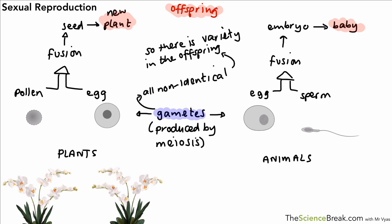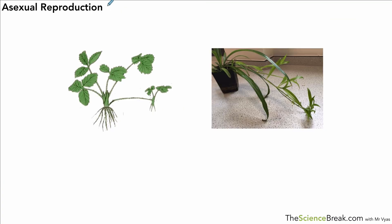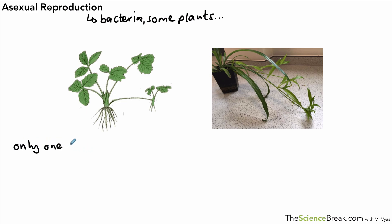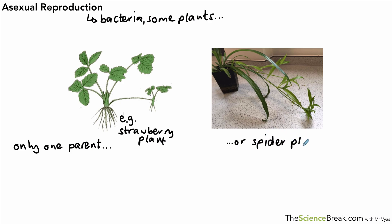Asexual reproduction is slightly different. It happens in some simple single-celled organisms, for example bacteria, but it can also happen in some types of plant. With asexual reproduction we only have one parent. Examples include the strawberry plant and the spider plant, which is quite common in school laboratories.